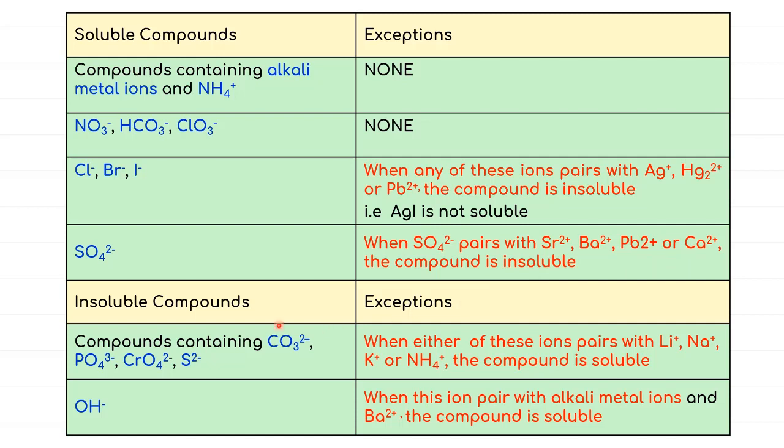While insoluble salts usually contain an ion of carbonate, phosphate, chromate, and also sulfite, if they form compounds with either lithium, sodium, potassium, and ammonium ion, the compound becomes soluble. Another insoluble compound is one with OH-, but if alkaline metal ions and also barium pair up, they will become soluble.